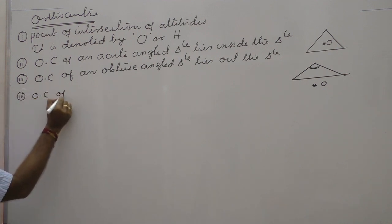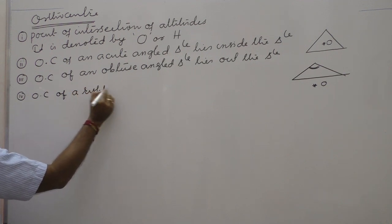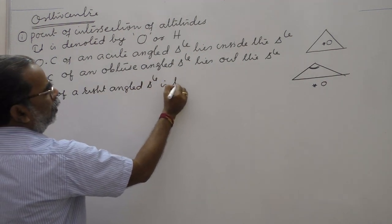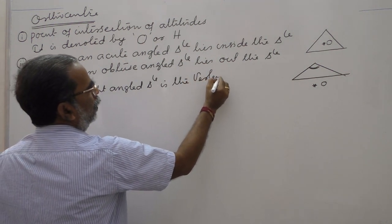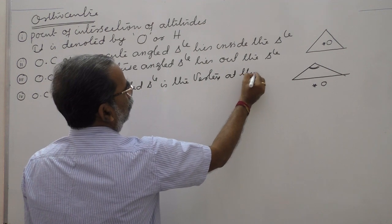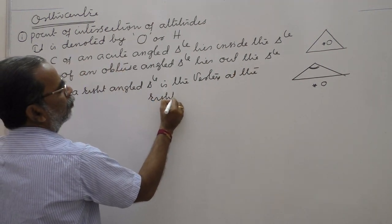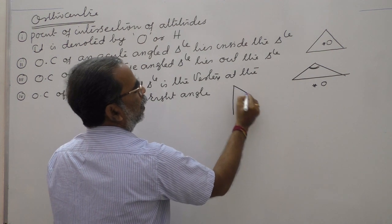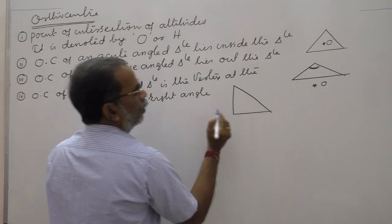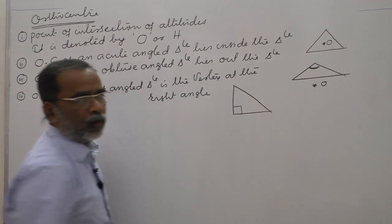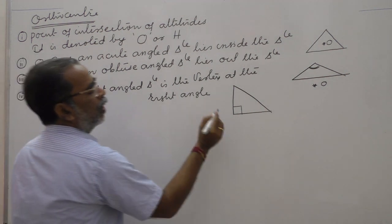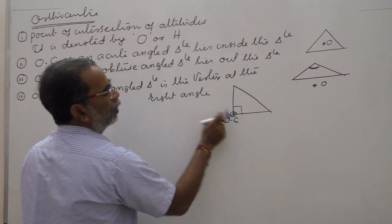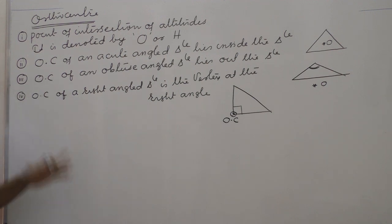The orthocenter of a right-angled triangle is the vertex at the right angle. If the triangle is right-angled at a certain point, then the orthocenter is at that vertex — the vertex at the right angle.